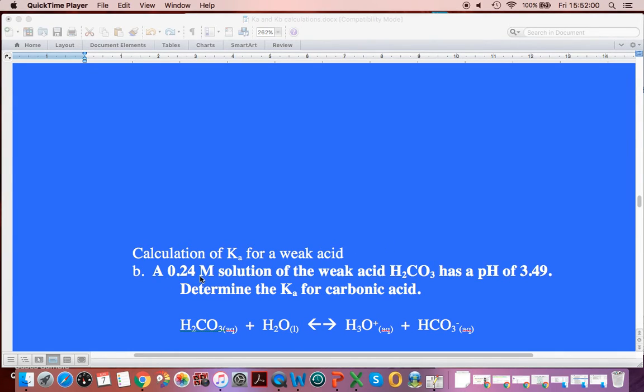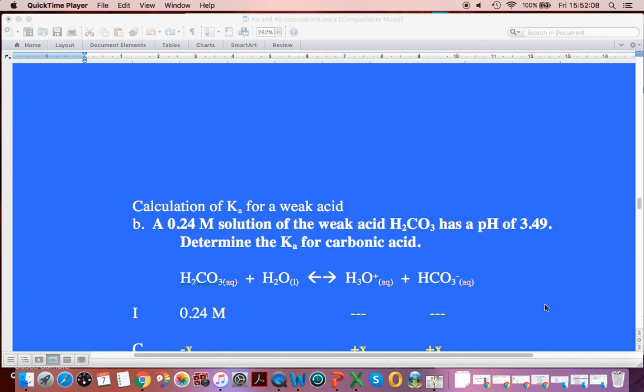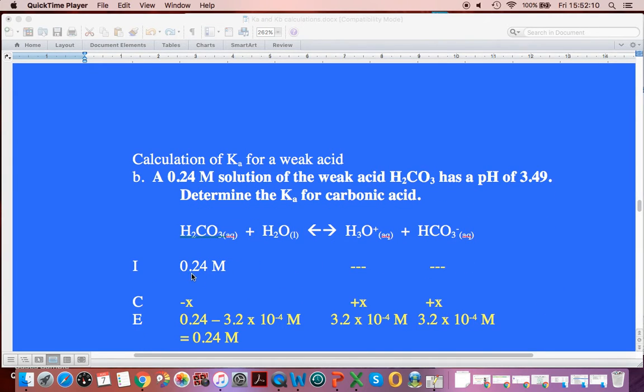So this time we have the starting concentration, just like we did before. But now we have the pH, which is what we calculated in the last question. So let's see how we get on here. We know this is 0.24. The pH of 3.49, that allows us to convert it to 3.2 times 10 to minus 4. So we made that negative, and then we inverse logged it to get that value. And we know X and X of it.